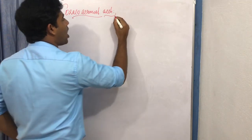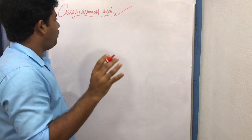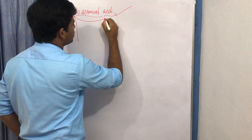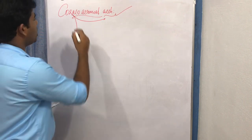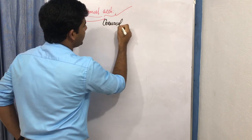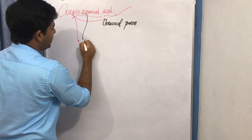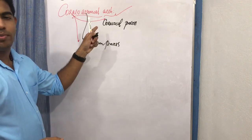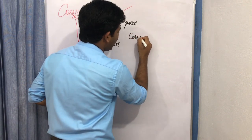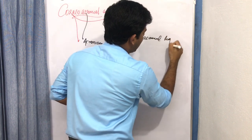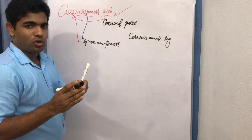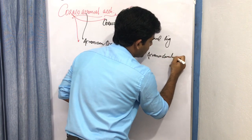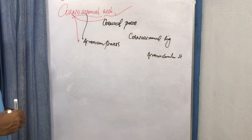Let's break down the term 'coracoacromial arch.' It contains the coracoid process, the acromion process, the coracoacromial ligament, and the acromioclavicular joint, which is formed between the clavicle and the acromion process. These are the key terms you need to understand this concept.